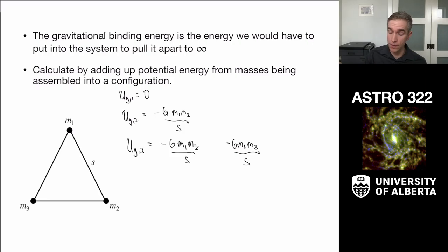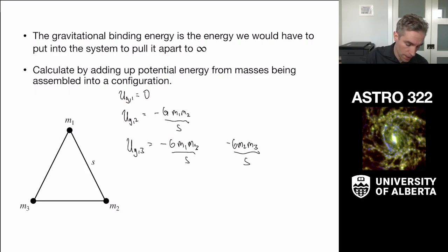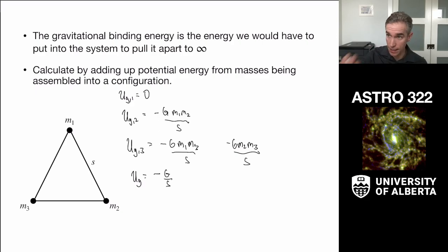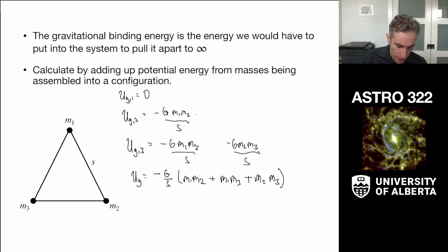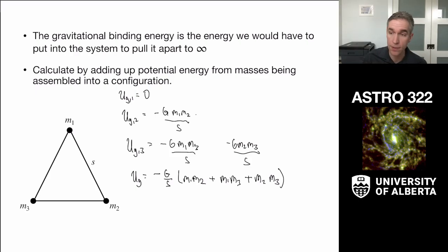The total gravitational energy of the system is the sum of all three contributions: negative G over s times (m1 m2 + m1 m3 + m2 m3). Even though the first mass contributed nothing, we end up with every possible mass interacting with every other mass in the system, and each pair makes a contribution to the gravitational binding energy.